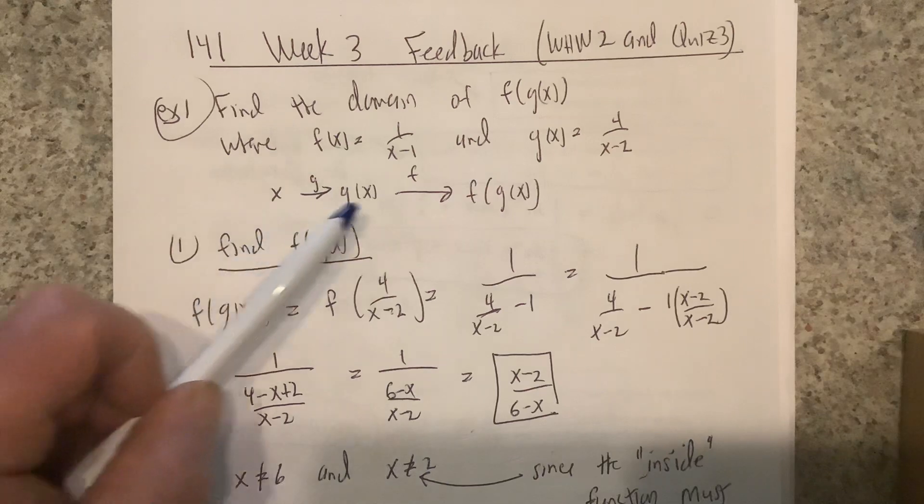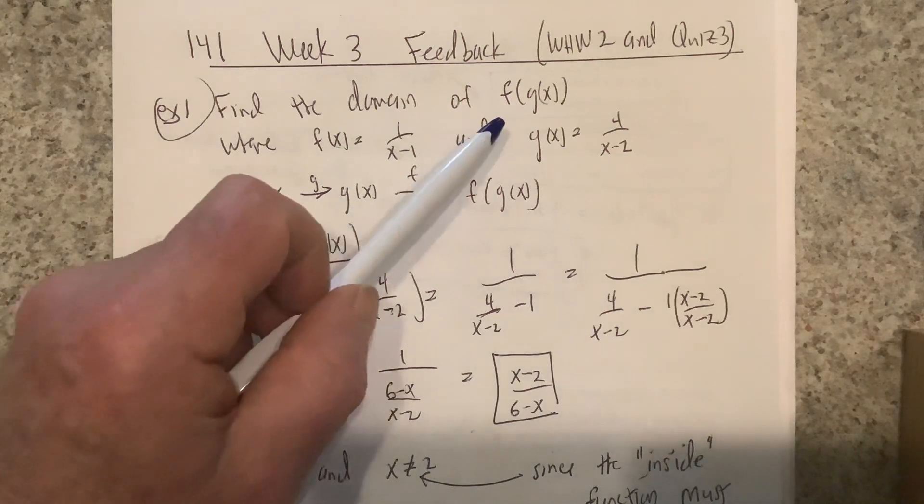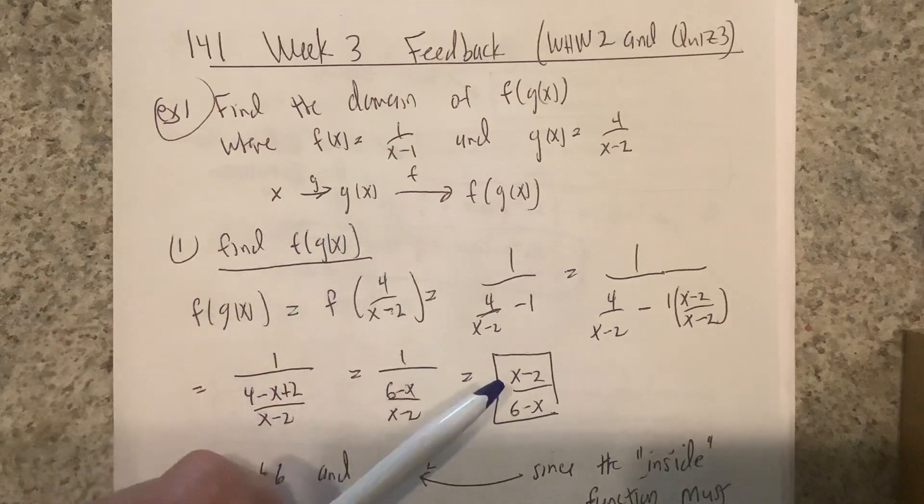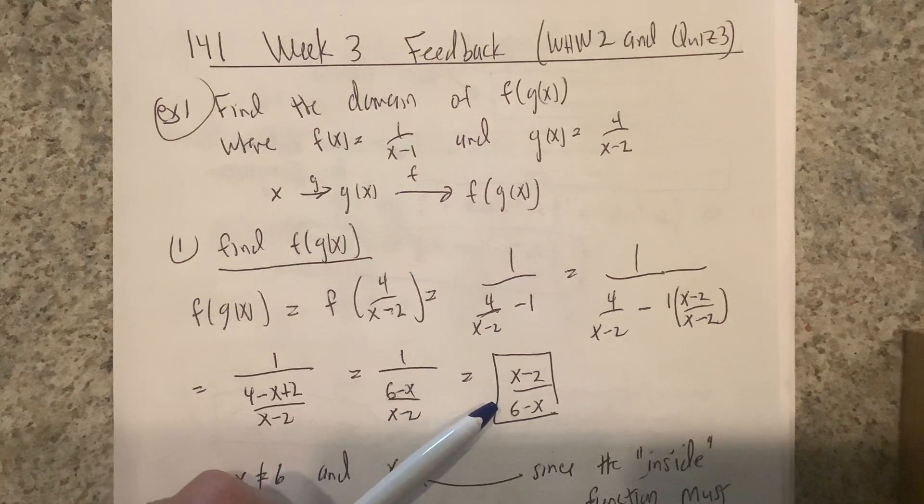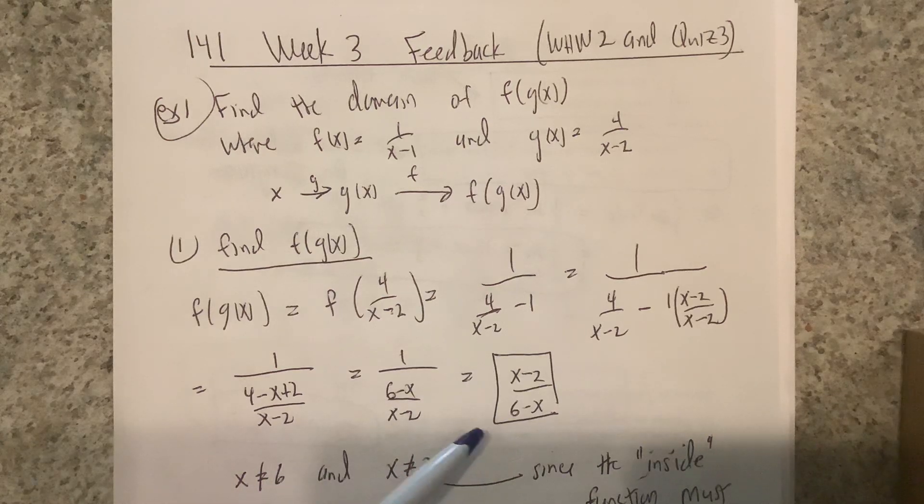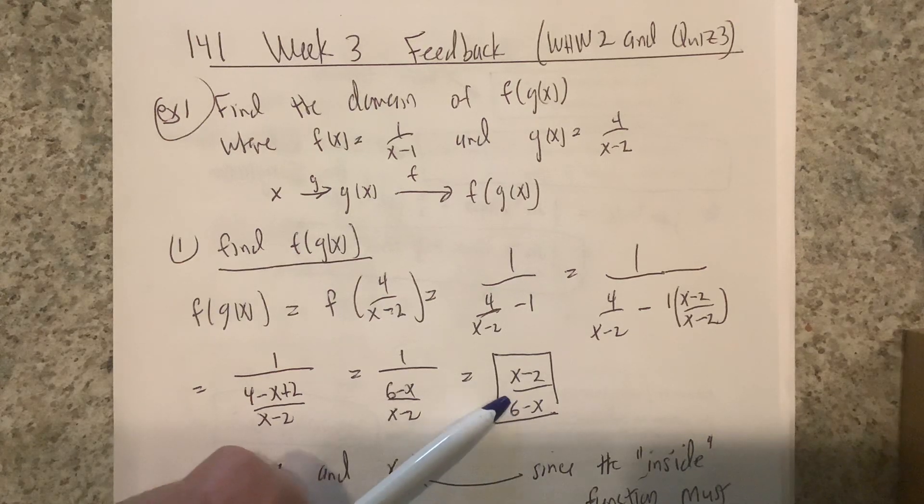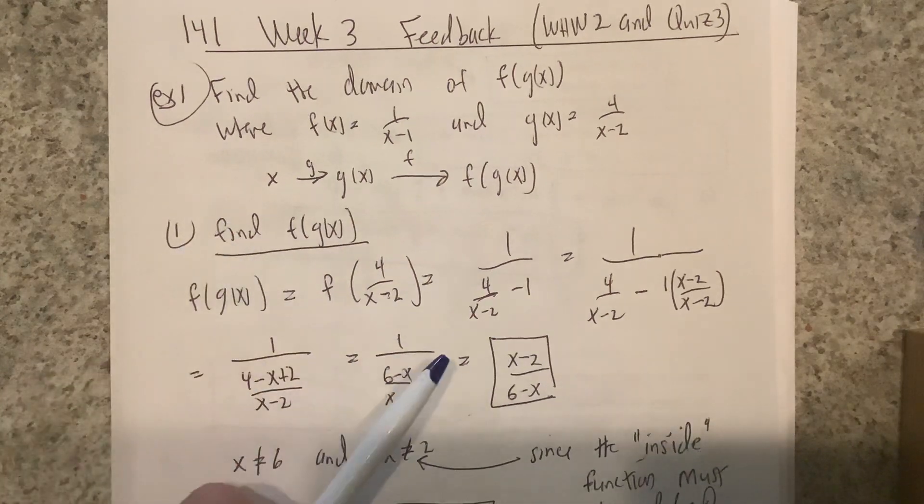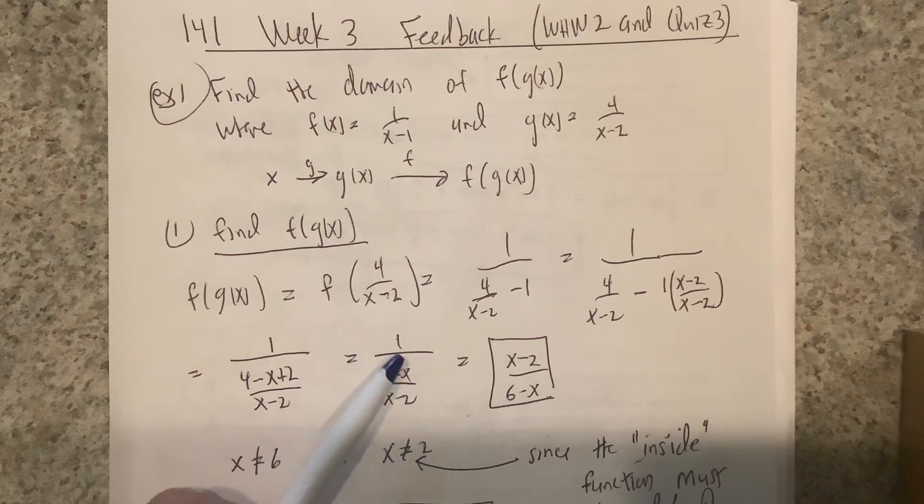Think of it as two stages, and the inside function is g(x), so x has to be in the domain of the inside function. And when you form the composition, x must be in the domain of that result also. What I would suggest you do is first find the composition of the two functions.